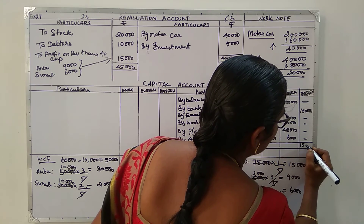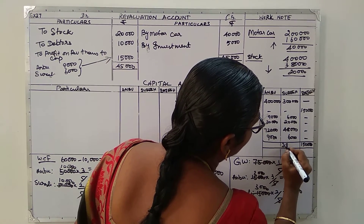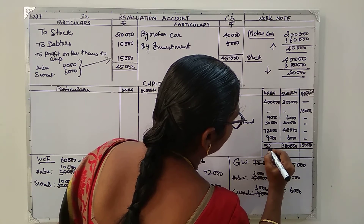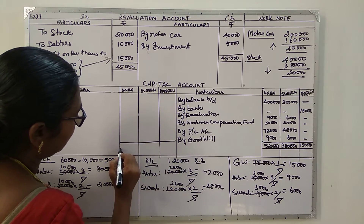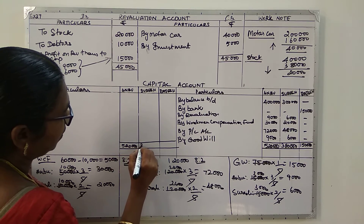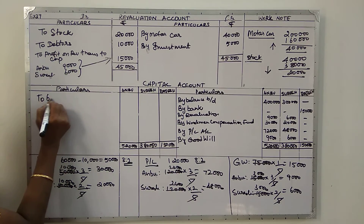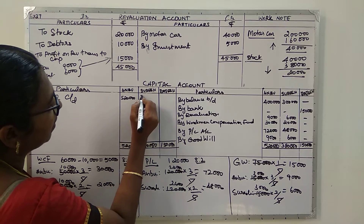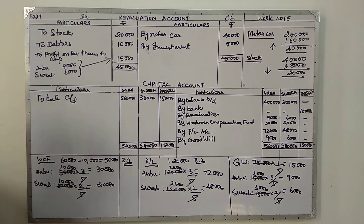Totalling the capital accounts: Anbu's account comes to five lakh twenty thousand, Suresh's account is three lakh eighty thousand, and Rajesh's is one lakh fifty thousand. These balances are carried down as the new closing balances for all three partners.